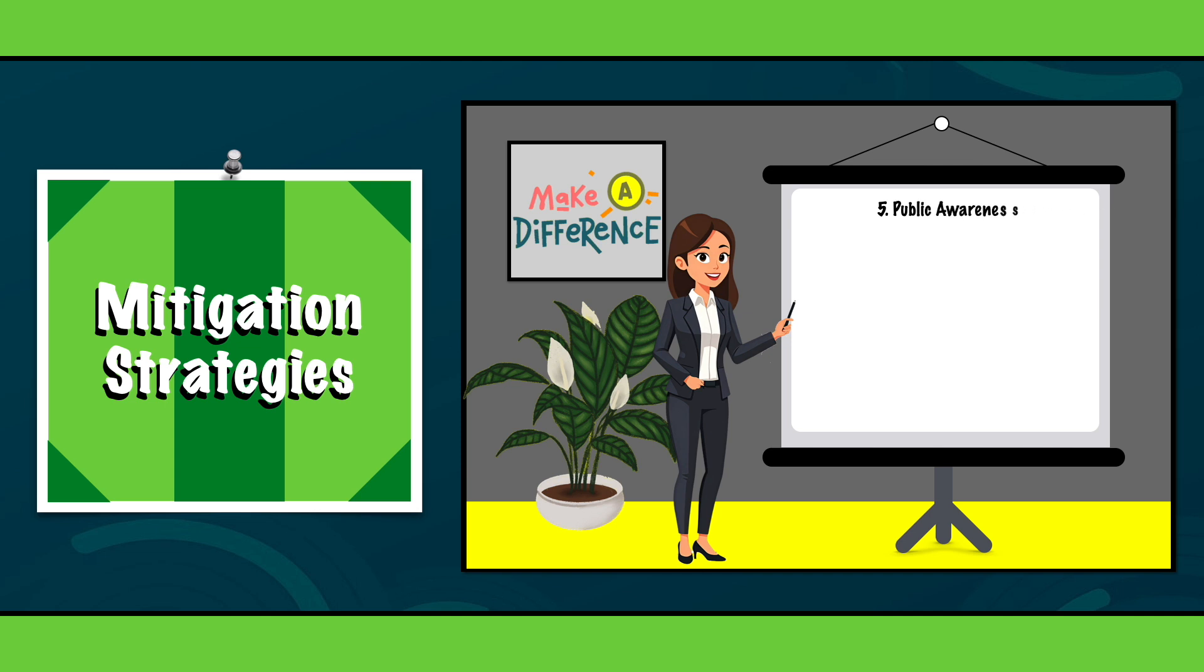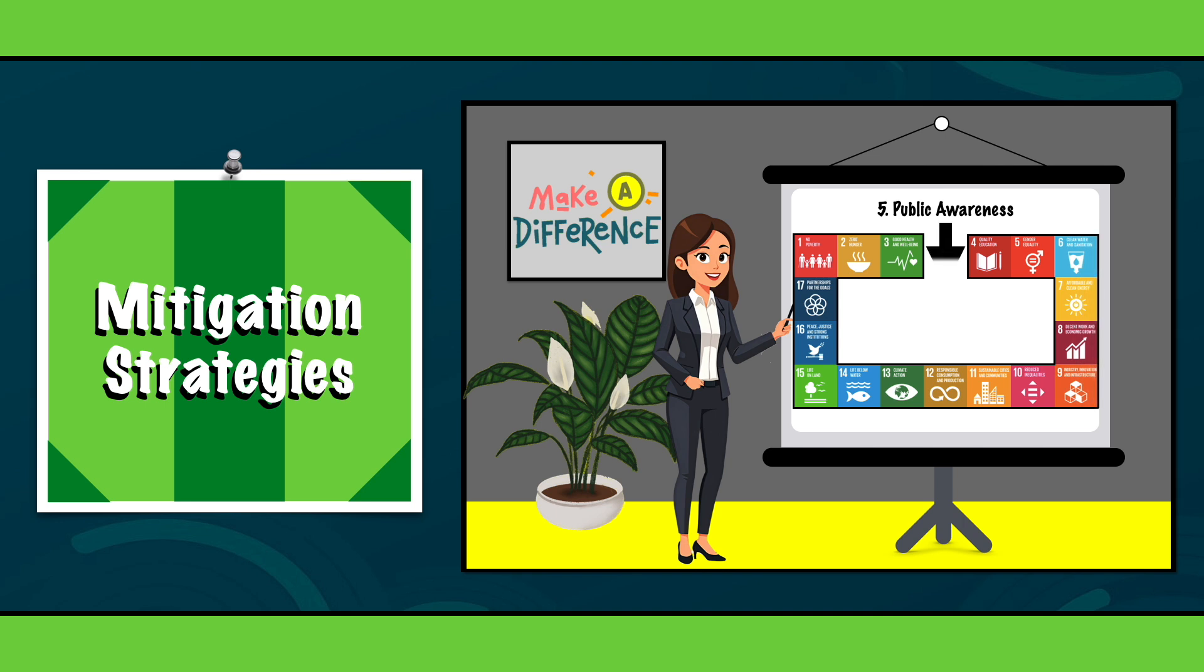5. Public awareness. Education and outreach programs can help people understand the importance of reducing pollution in their everyday lives. Small changes like using public transport or turning off lights when not in use can have a big impact. Interested in learning more eco-friendly habits? Be sure to watch the other videos on my channel.